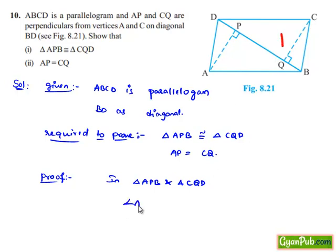In these triangles, angle APB is equal to angle CQD, which equals 90 degrees, since AP is perpendicular to BD and CQ is also perpendicular to BD.